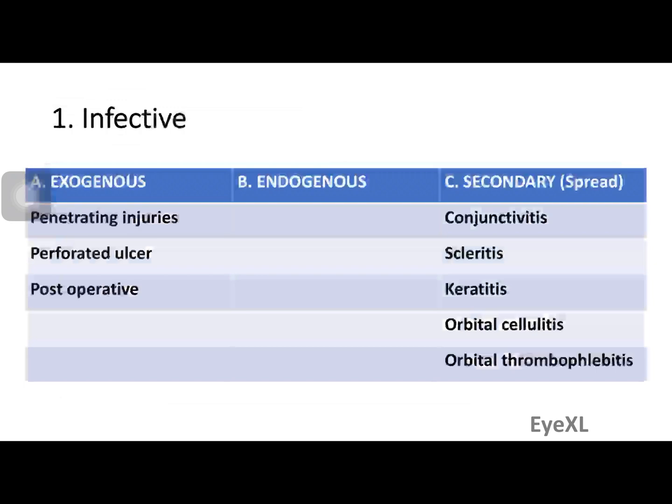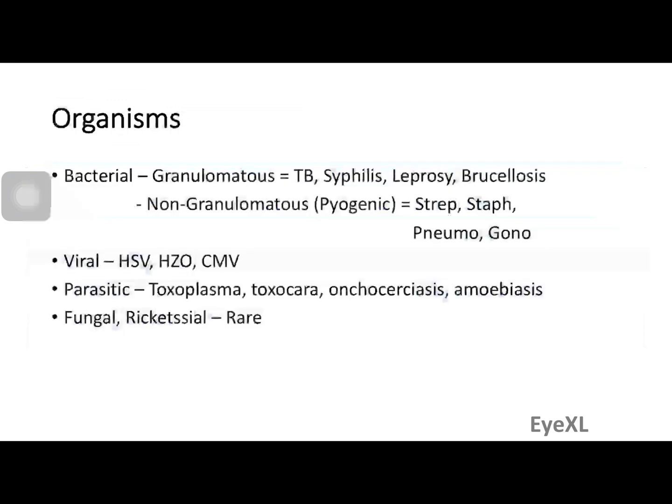Endogenous infection occurs when there is already a source inside — such as fever or a COVID infection — that somehow reaches the uvea. More commonly, it is a secondary spread from the conjunctiva (conjunctivitis), sclera (scleritis), cornea (keratitis), or orbital cellulitis and orbital thrombophlebitis. These are the sources of infective organisms that can reach the uvea.